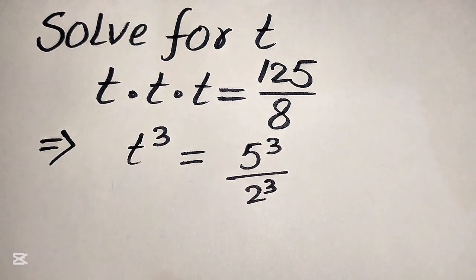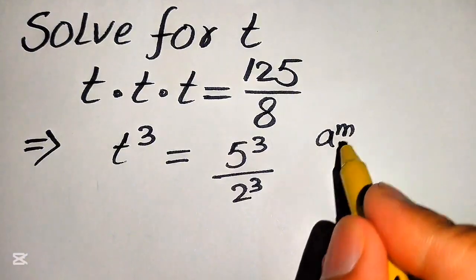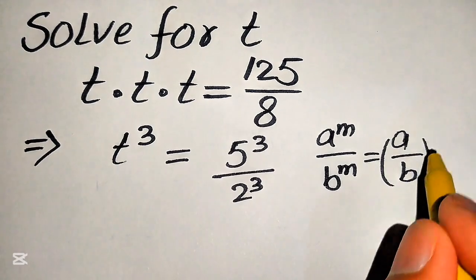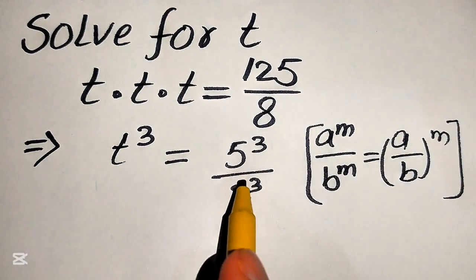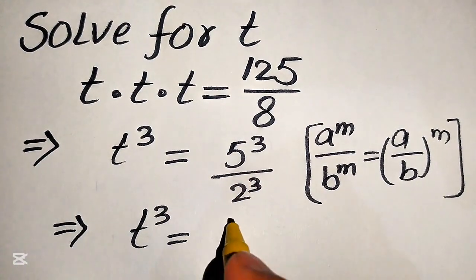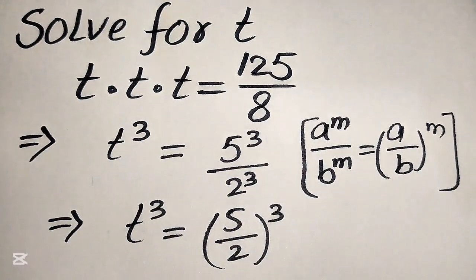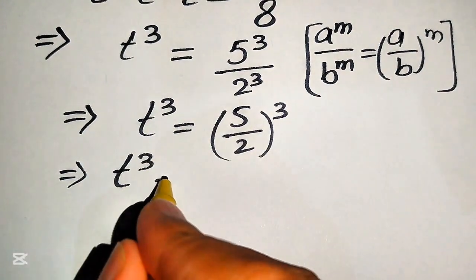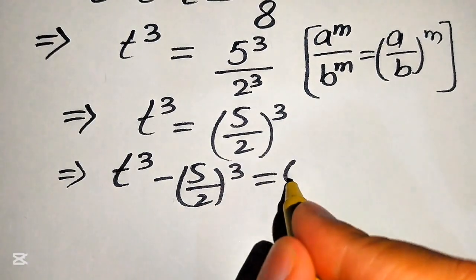Now we apply the exponent law. You know that if we have a to the power of m divided by b to the power of m, it equals (a over b) to the power of m. According to this law, we combine the exponents of the two terms, giving t cubed equals (5 over 2) whole cubed. Moving the right-hand side over, we get t cubed minus (5 over 2) cubed equals 0.